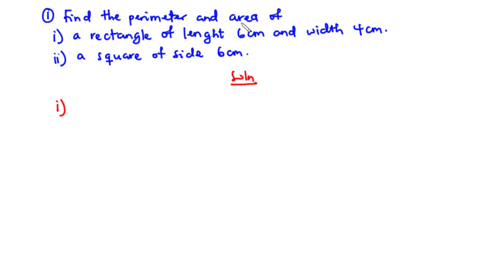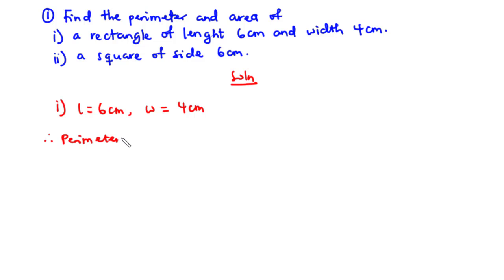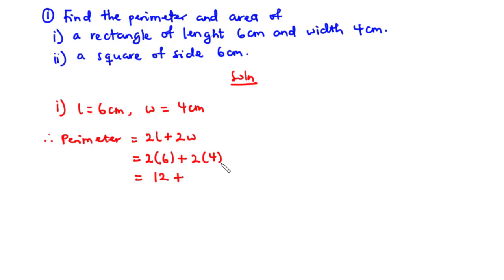For part (i), the rectangle has length L equals 6 cm and width W equals 4 cm. The perimeter is given by 2L plus 2W. That is 2 times 6 plus 2 times 4, which gives 12 plus 8 equals 20. Therefore the perimeter is 20 centimeters.